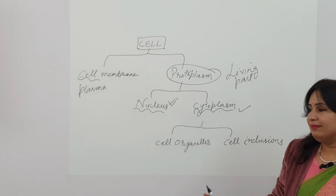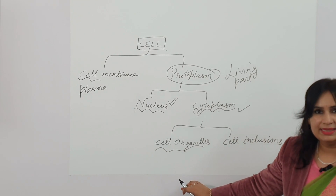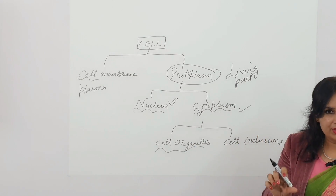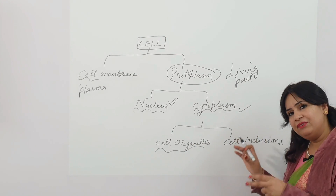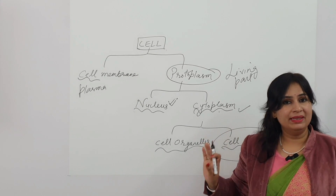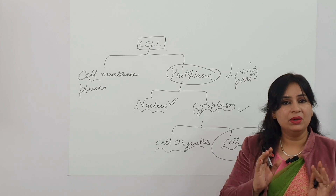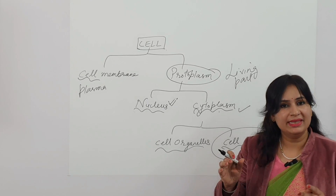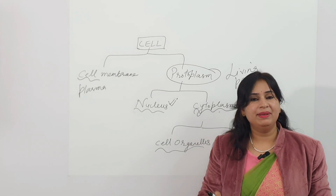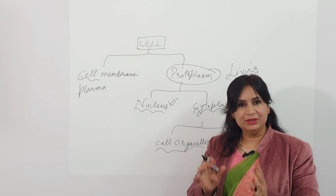Cytoplasm is further divided into cell organelles and cell inclusions. Cell organelles are the living parts of the cell — they have distinct structures and perform specific functions. Cell inclusions are the non-living part of the cell which are present in the cytoplasm.